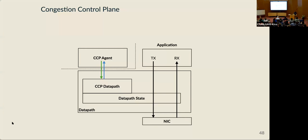The key idea is to encapsulate congestion control in a separate component and decouple algorithm sophistication from the complexity of the data path runtime environment. We call this new architecture the Congestion Control Plane, or CCP. CCP provides a separate runtime outside the data path runtime for congestion control algorithms to run. There are two advantages: first, 'write once, run anywhere' — the same implementation of a congestion control algorithm can interface with multiple supported data paths. Second, enabling more sophisticated algorithms because implementations aren't tied to the data path runtime environment's complexity.